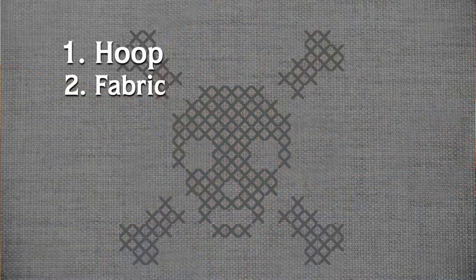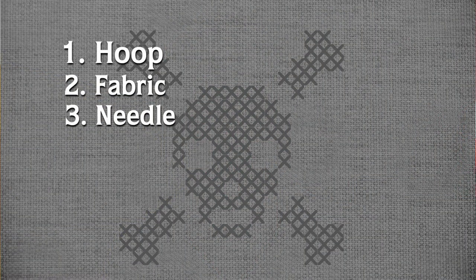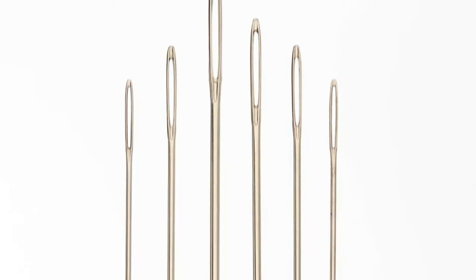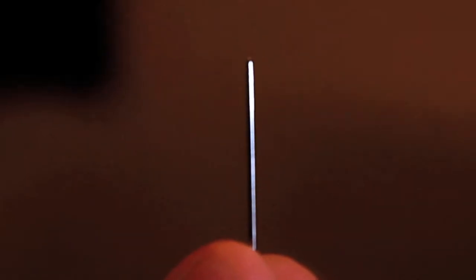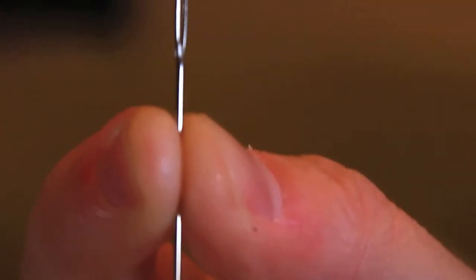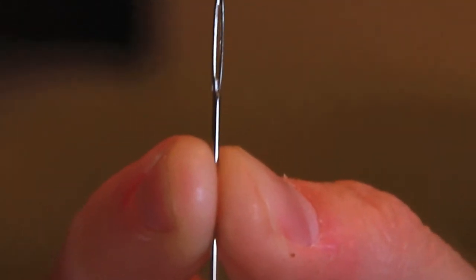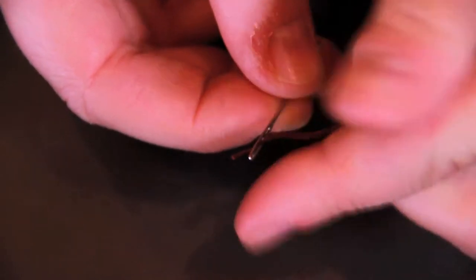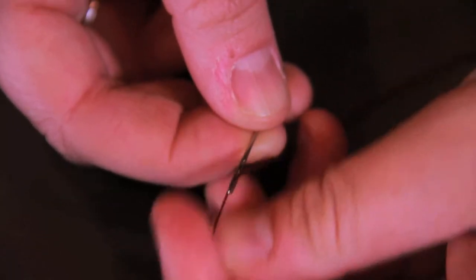You've got your hoop, you've got your fabric — now you need a needle. I work with tapestry needles. They have a rounded tip so that when you're working with them, you're not constantly stabbing yourself and bleeding all over your embroidery. They also have a much bigger eye, which just makes your life a lot easier when you're constantly threading and rethreading.